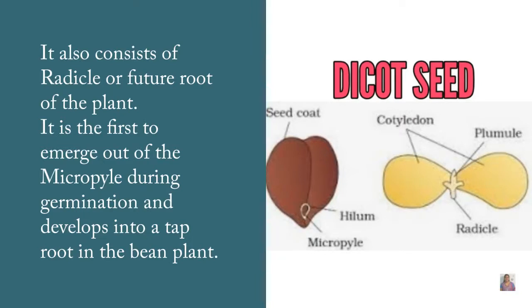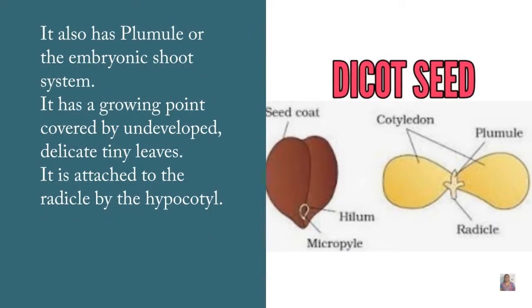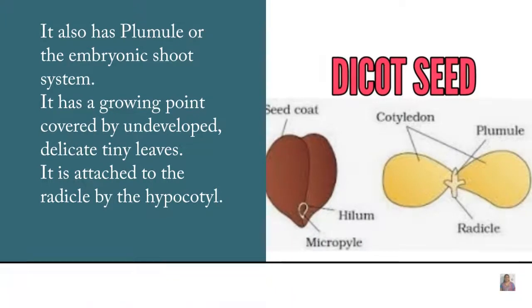The cotyledon consists of the radicle, which is the future root of the plant. It is the first to emerge out of the micropyle during the germination process and develops into a tap root in dicot plants. It also has the plumule, which develops into a future shoot. It has a growing point covered by delicate tiny leaves, and it is attached to the radicle by the structure called the hypocotyl.